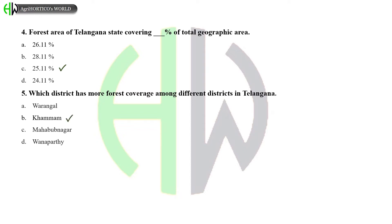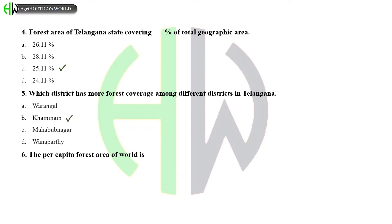The per capita forest area of the world is: 1 hectare, 2.6 hectare, 2.1 hectare, or 3.1 hectare? And the correct answer is 2.6 hectare.